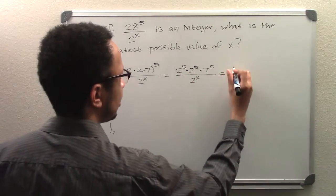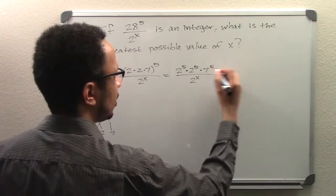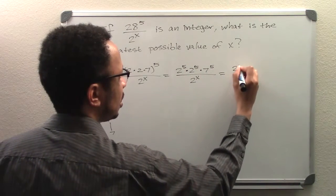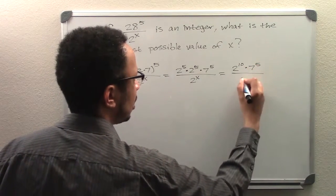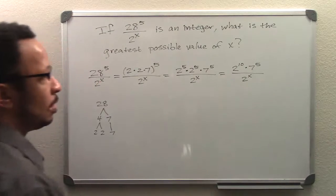Next, we'll go ahead and reform it again to be 2 to the 10th power times 7 to the 5th power over 2 to the x.